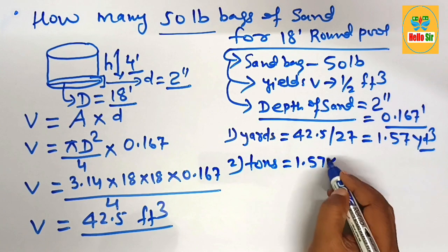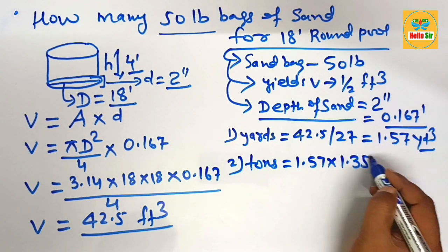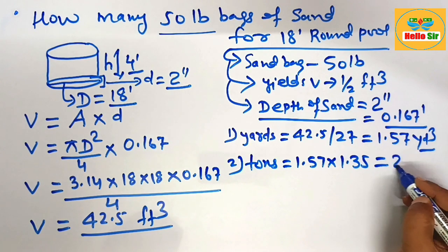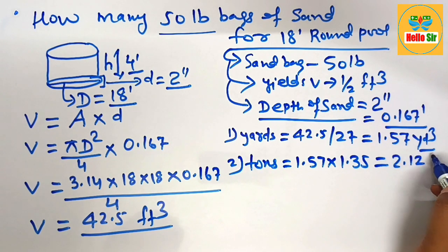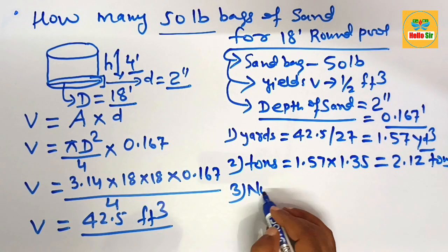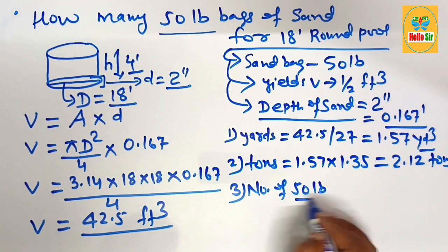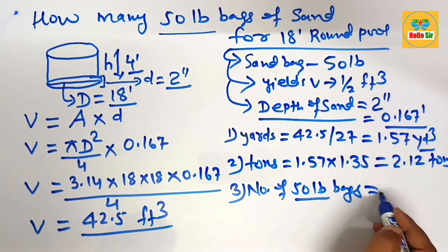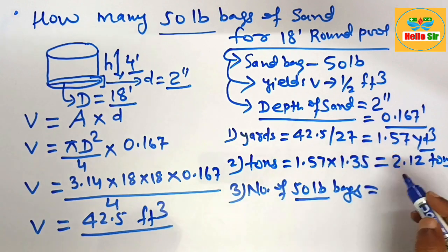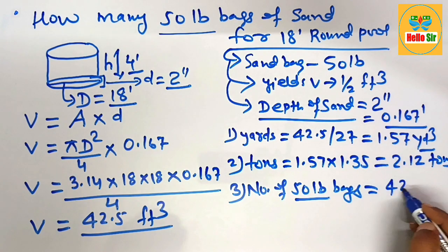1.57 × 1.35 to calculate the tons of sand required. This equals 2.12 tons. If you want to calculate the number of 50-pound bags, then just multiply the volume of sand required in cubic feet, which is 42.5, by 2.